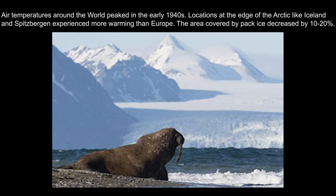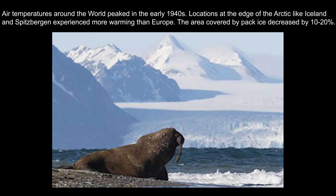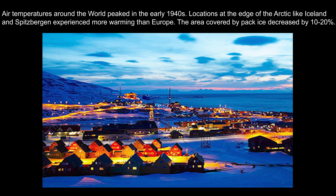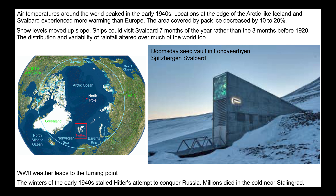Air temperatures around the world peaked in the early 1940s from their rise out of the 1890s. Locations in the Arctic like Iceland and Spitsbergen — now Svalbard — experienced more warming than Europe, and the area covered by ice pack decreased by 10 to 20 percent. Arctic ice was shrinking, snow levels moving up slope. You could visit Svalbard seven months of the year rather than just three months before 1920. Rainfall distribution and variability also altered over much of the world.